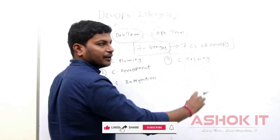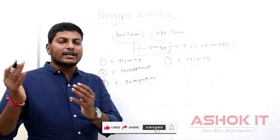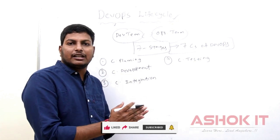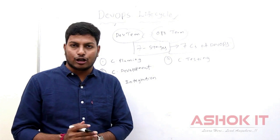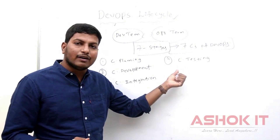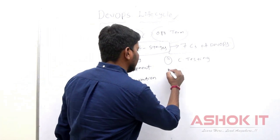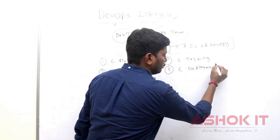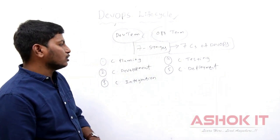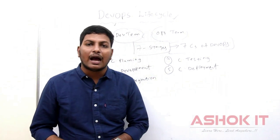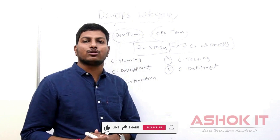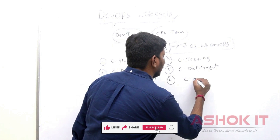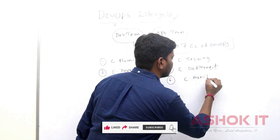Once integration is completed, then continuous testing is required. The testing team comes into picture to test the application functionality — what is the client requirement, what we have developed, and whether our development activity is working as expected by the client. Once testing is completed, then continuous deployment is required. Whatever code is developed by developers should be deployed into a server and delivered to the client. Once deployment is completed, people can access our application. We need to perform continuous monitoring — how our application is working, are there any issues, is it working as expected.